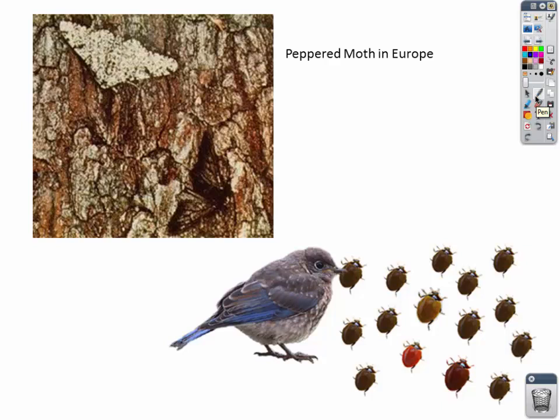A very famous example is the peppered moth in Europe during the Industrial Revolution. The peppered moth is white with black specks — it developed that adaptation because it sleeps during the day and must be camouflaged. In Europe, the birch tree is white with black little spots, so the peppered moth survivors looked white with black spots to hide from birds. During the Industrial Revolution, pollution caused soot to cover the birch trees, turning them black. Birds could easily see white speckled moths on dark birch trees, so those were eaten — the whites stood out.